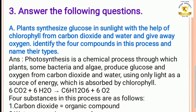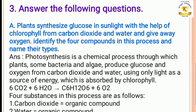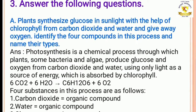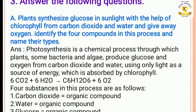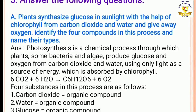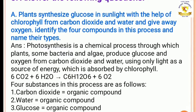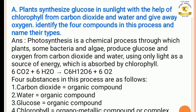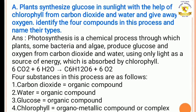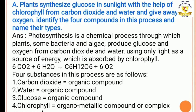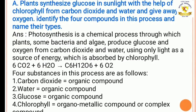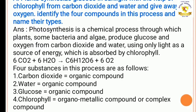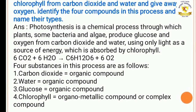Now question number 3: answer the following questions. A. Plants synthesize glucose in sunlight with the help of chlorophyll from carbon dioxide and water and give away oxygen. Identify the 4 compounds in this process and name their types. The answer is given here in detail. Children, please write it correctly.